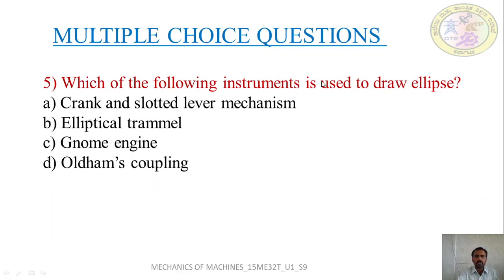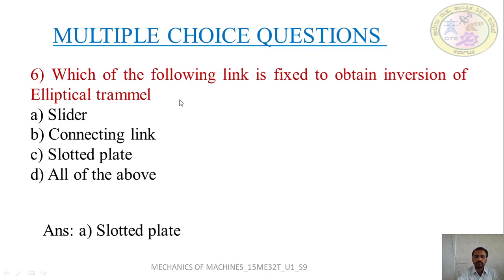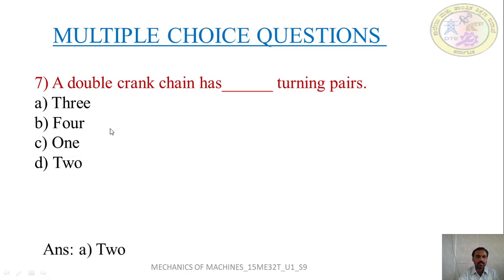Next question: which instrument is used to draw an ellipse? Options are crank and slotted lever mechanism, elliptical trammel, norm engine, or Oldham's coupling. The answer is elliptical trammel. Next question: which link is fixed to obtain the elliptical trammel inversion - slider, connecting link, slotted plate, or all of the above? The answer is slotted plate. By fixing the slotted plate you get the elliptical trammel inversion. Next question: how many turning pairs does a double slider crank chain have? Options are 3, 4, 1, or 2. The answer is 2 turning pairs.